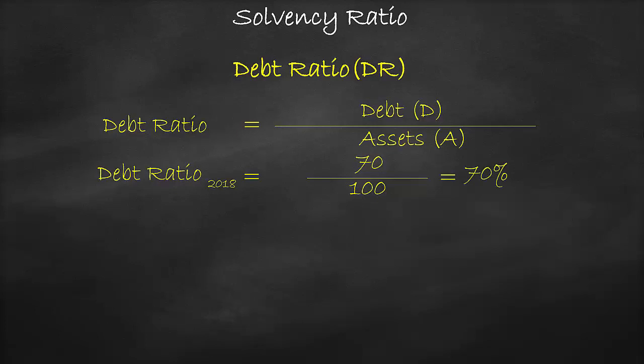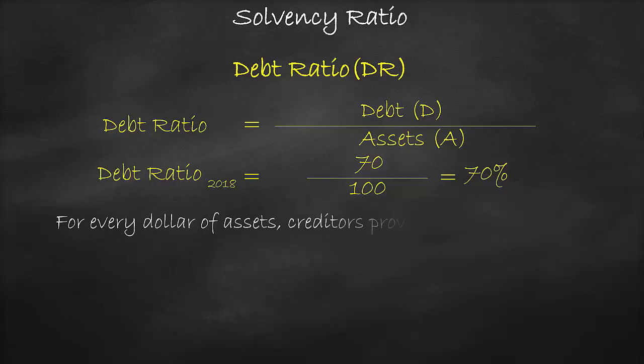The unit of debt ratio is a percentage. This means that for every dollar of assets, creditors provide $0.70 as debt.